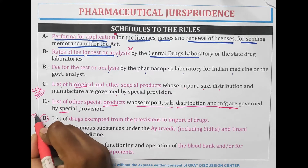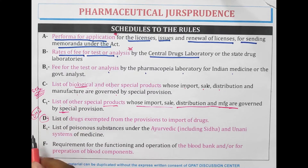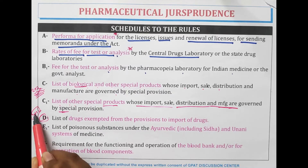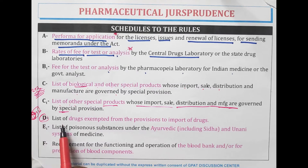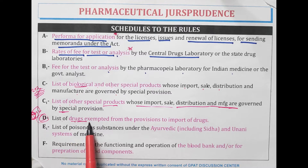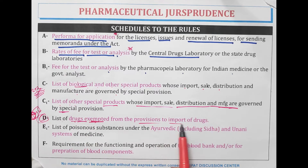Schedule D — D for DHL. DHL is a company used for importing and exporting. So D stands for import and export. Schedule D is the list of substances or drugs which are exempted from the provisions of import of drugs.